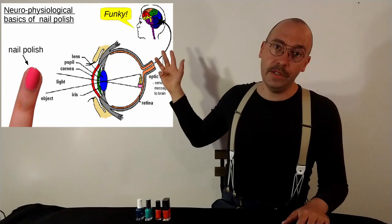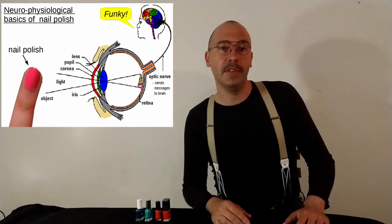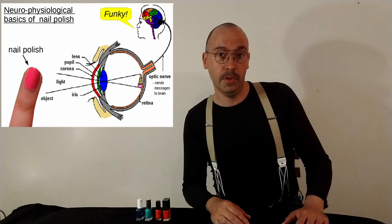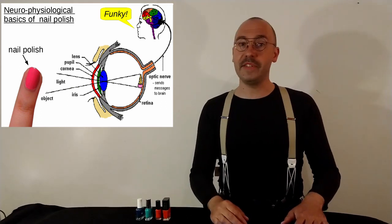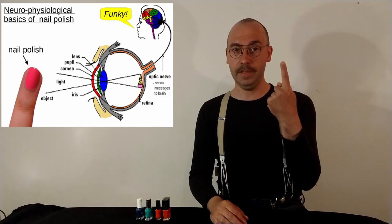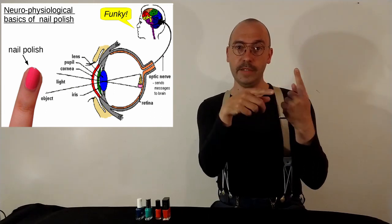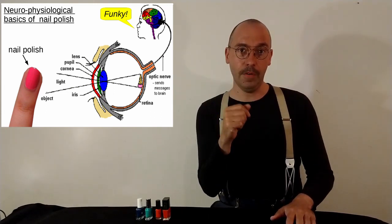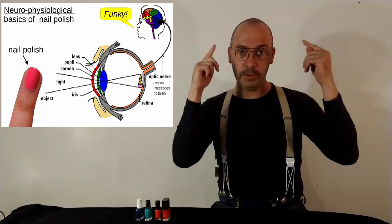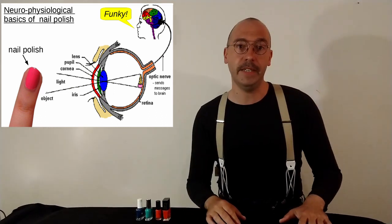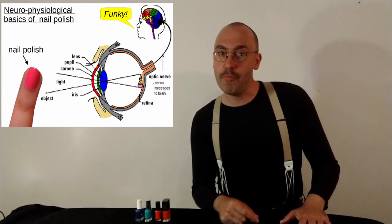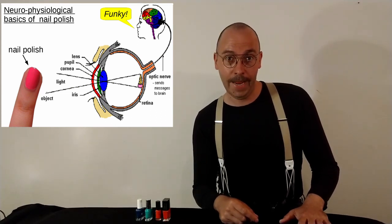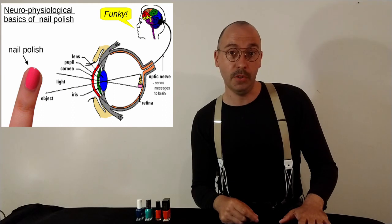This here is a simple illustration of the science of nail polish, the neurophysiological basics behind it. That's how it works. The sunlight reflects on your fingernail, on the polish, creates a reflection into the eye of the observer, which in retrospect creates a nervous signal which then creates in the brain an impression of color and astonishment about the beauty of it.